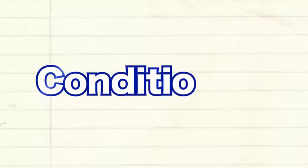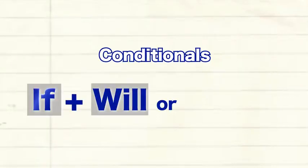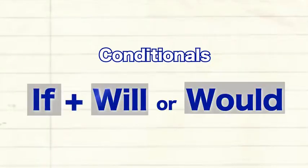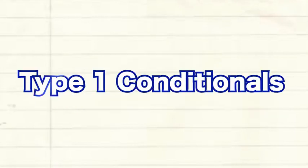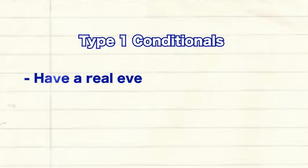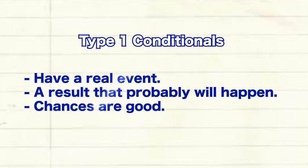In this lesson you can learn about conditionals. They have 'if' and 'will' or 'would.' There are two kinds of conditional sentences in this lesson. Type 1 conditionals have a real event and a result that probably will happen. Chances are good.